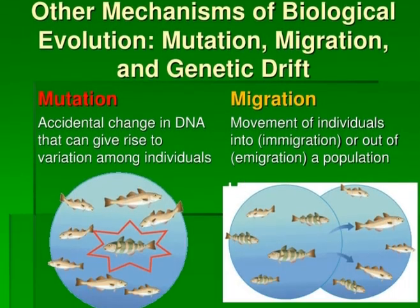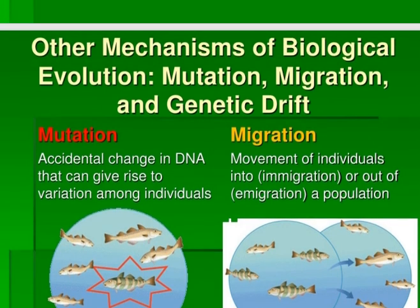Factors that can affect evolution are mutation, migration, and genetic drift. Mutation is an accidental change in the DNA that can give rise to variations among individuals. Emigration is when the movement of individuals out of the population causes change.